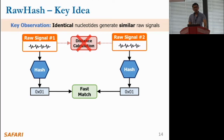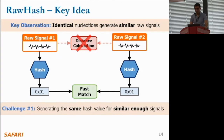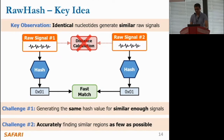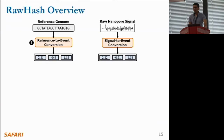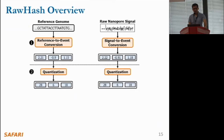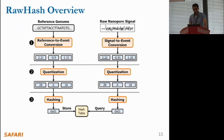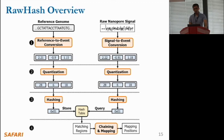Instead, we generate hash values from raw signals and quickly match them to identify similarities. We find two key challenges to overcome. First, to match hash values we need to generate the same hash value from similar raw signals. Second, to facilitate quick similarity search we need to find accurate but fewer similar regions in the large search space of the reference genome. To solve these challenges, RawHash has four key steps: converting reference genome and raw signals into events; quantizing these events to reduce variation; generating hash values from quantized values; and performing chaining and mapping based on matching regions.